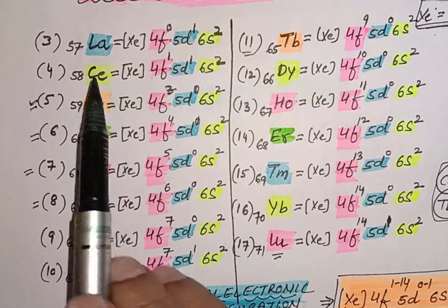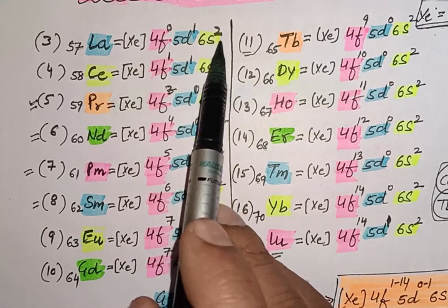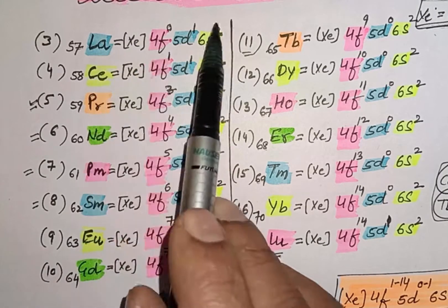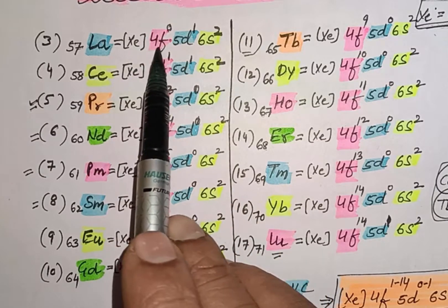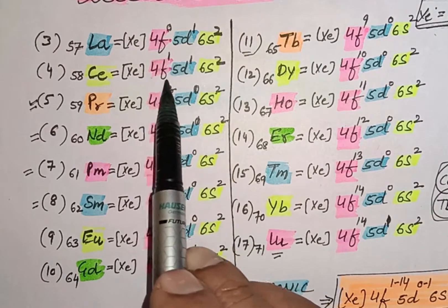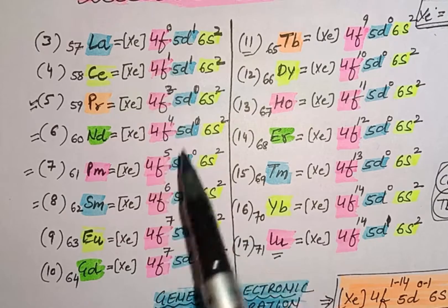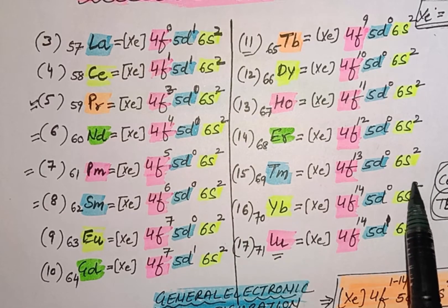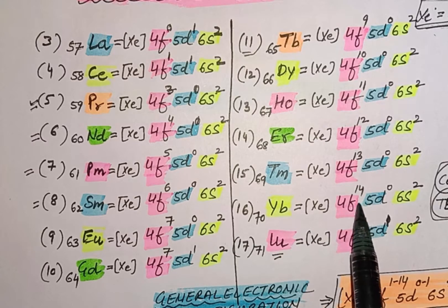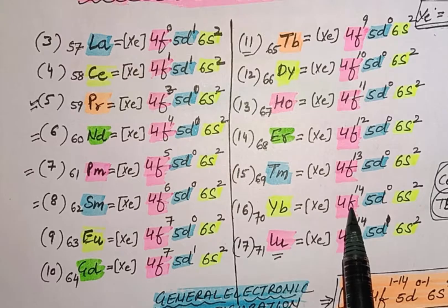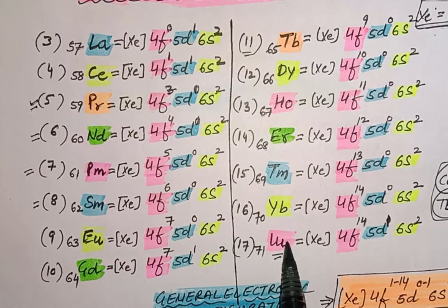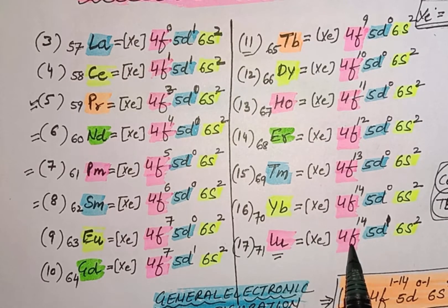The electronic configuration of lanthanum is 4f⁰ 5d¹ 6s². After removal of 3 electrons — 2 from s and 1 from d — it becomes La³⁺ with an f⁰ configuration, so no unpaired electron. In the case of Ce⁴⁺, after removal of 4 electrons the configuration becomes f⁰ so the f orbital is empty. For ytterbium, removing 2 electrons gives Yb²⁺ with an f¹⁴ configuration — all orbitals fully filled, no unpaired electron. For lutetium, removing 3 electrons gives Lu³⁺ with a 4f¹⁴ configuration — again, no unpaired electron.